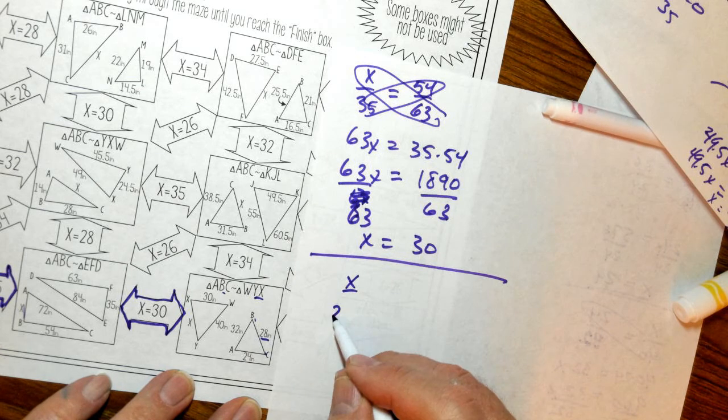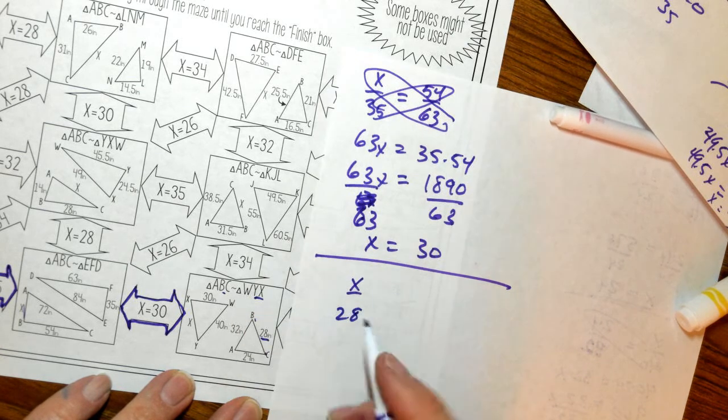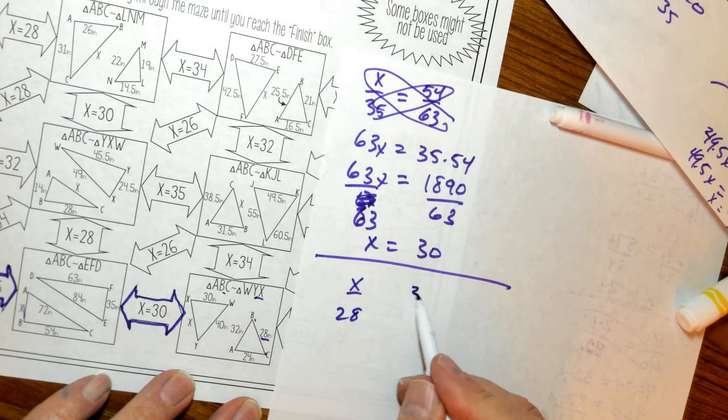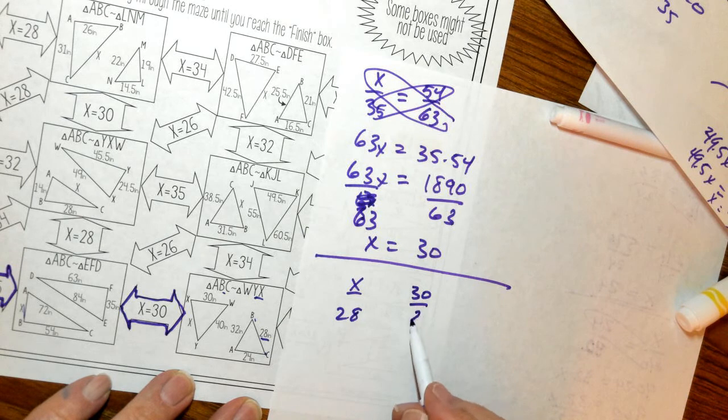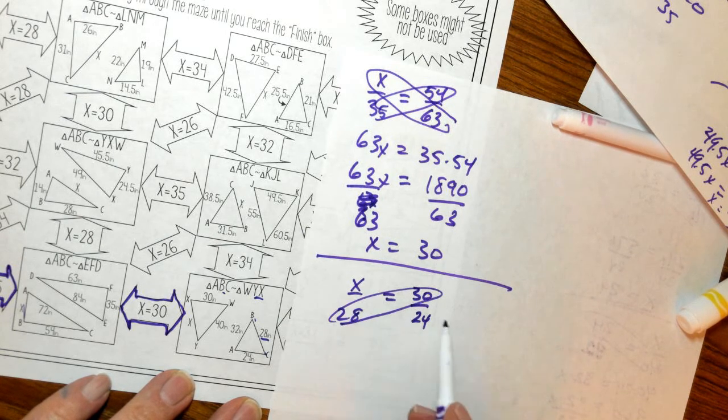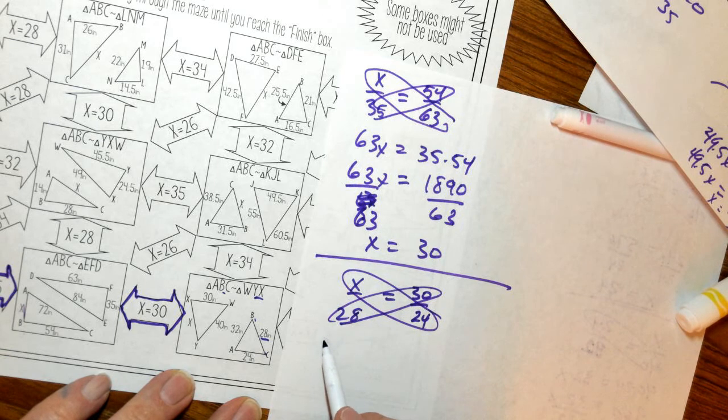This is rotated. As 30 is to 24. So my cross product is going to be 30 times 28 and X times 24. So 24X equals 30 times 28.